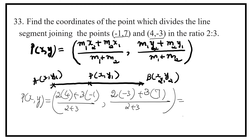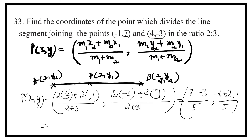That is equal to: 2 into 4 is 8, minus 3 — be careful with the sign — 3 into minus 1 is minus 3, giving 8 minus 3 equals 5 upon 5. For y: 2 into minus 3 is minus 6, plus 3 into 7 is 21, giving 21 minus 6 equals 15 upon 5. So 5 by 5 equals 1, and 15 by 5 equals 3. The coordinates of point P are (1, 3).